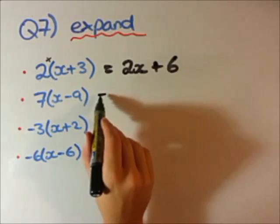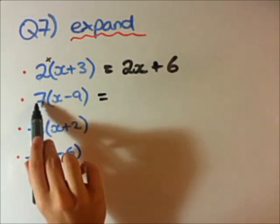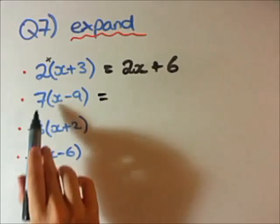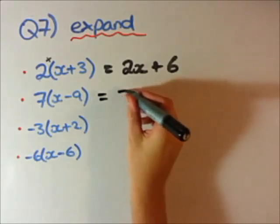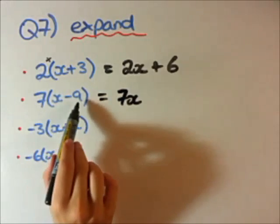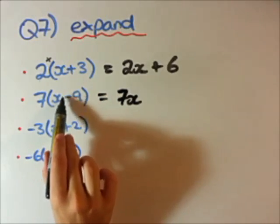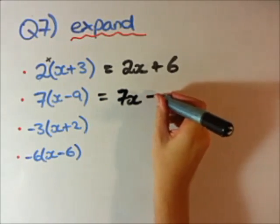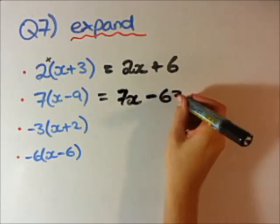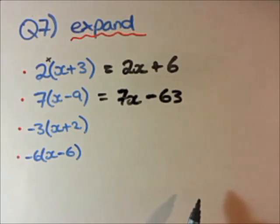So this is how we expand these algebraic equations with a number at the front with something in the brackets. We'll go ahead and do the next three as well. Using the same step, we multiply this number at the front by each element. 7 times x will be 7x, and 7 times minus 9 is minus 63. That is our expanded answer.